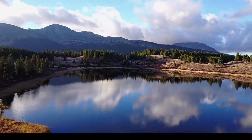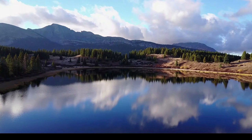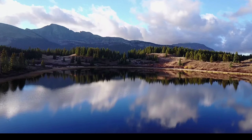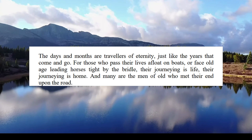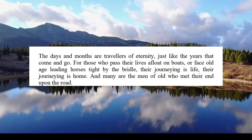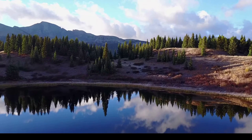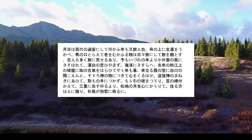The third book, The Narrow Road to the Deep North, is a Japanese poem written in the 17th century by Matsuo Bashō, who made a dangerous journey through the Edo Japan of the late 17th century. It starts: 'The days and months are travellers of eternity, just like the years that come and go. For those who pass their lives afloat on boats, or face old age leading horses tight by the bridle, their journeying is life, their journeying is home, and many are the men of old who met their end upon the road.' Obviously translations differ, but you can get the idea of how an epic journey could be relevant to Cook's work on Planescape.